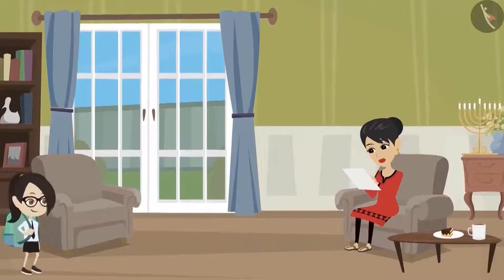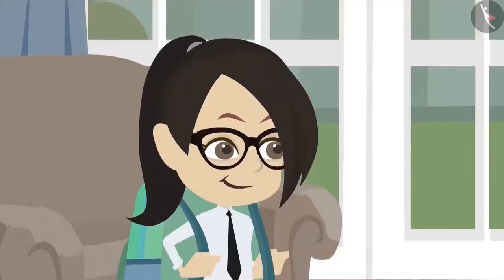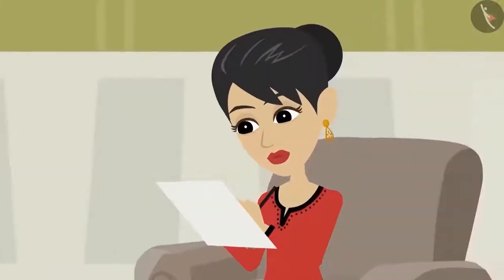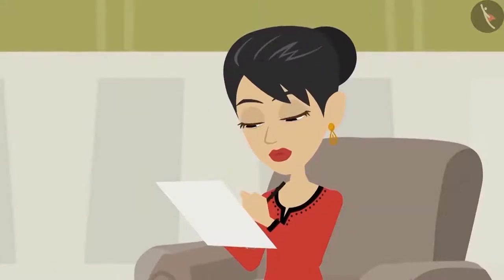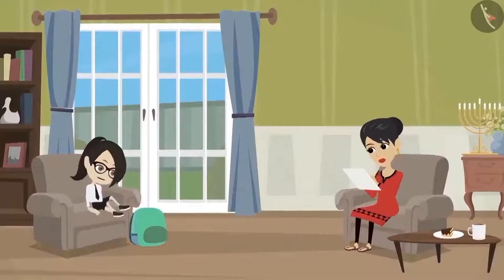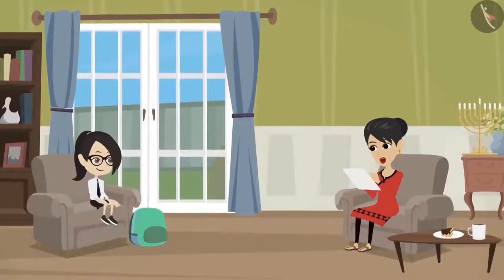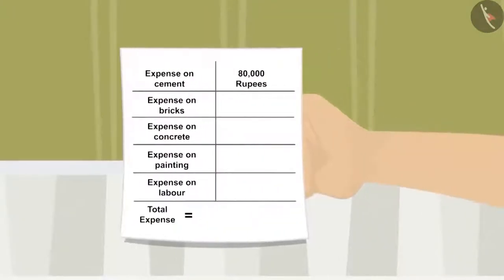Vandana comes home from school and sees that mom is calculating something on paper. She asks: 'Mother, what are you doing?' Her mother replies: 'Your father and I have decided to build rooms on the top floor of our house, Vandana. Therefore, I am calculating how much the total cost will be to build that floor.'